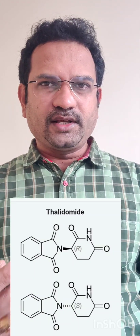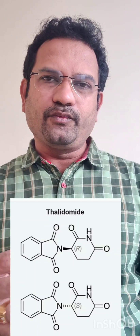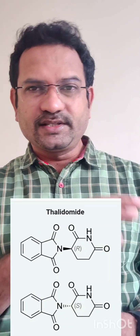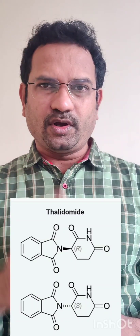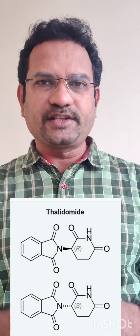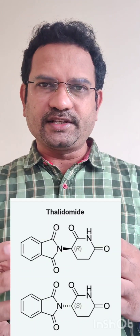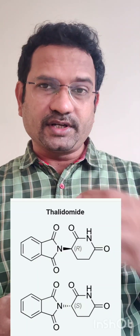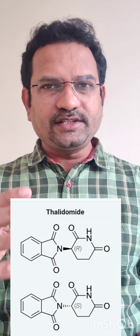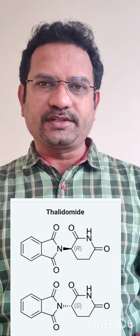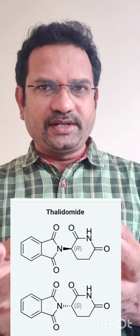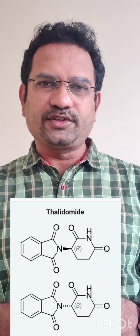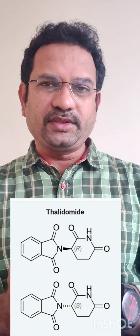After the ban, there has been a lot of research on thalidomide which has shown it can be used to treat many diseases. For your knowledge, thalidomide is given as a racemic mixture — R-isomer and S-isomer. The R-isomer has sedative properties, whereas the S-isomer causes teratogenic properties. Unfortunately, even if someone takes the R-isomer, in the biological system it gets converted into the S-isomer. That was the major problem with thalidomide.